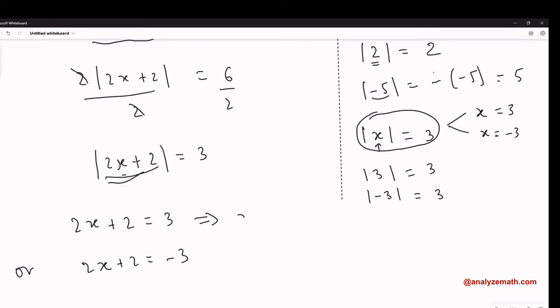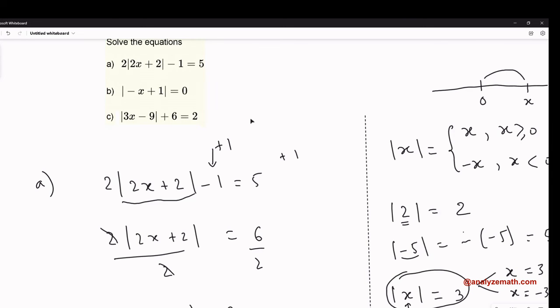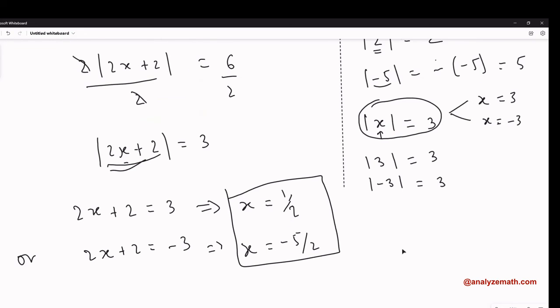Solving 2x + 2 = 3 gives x = 1/2. Solving 2x + 2 = -3 gives x = -5/2. These are the solutions of the given equation. As an exercise, you can substitute into the given equation in part A to verify that these are solutions.